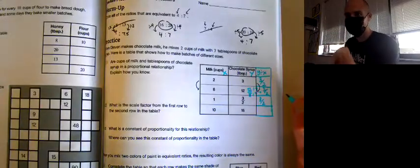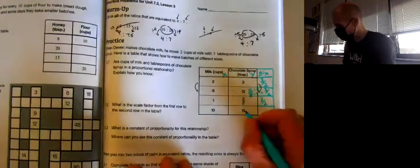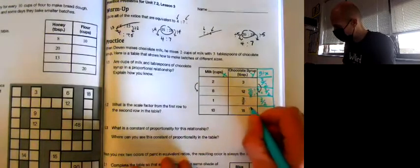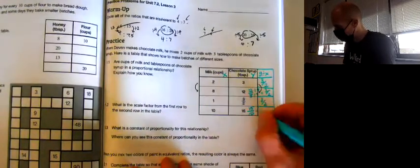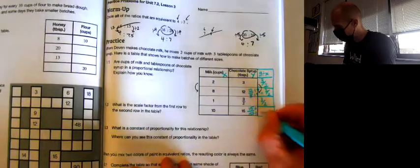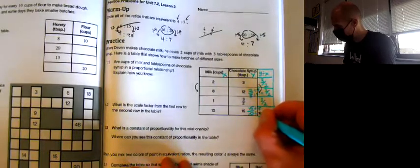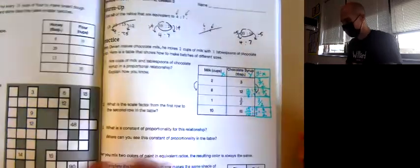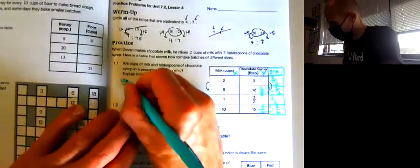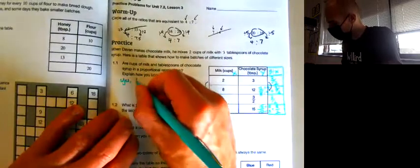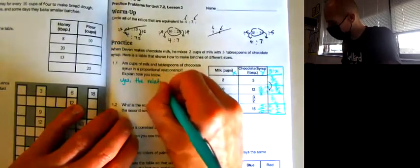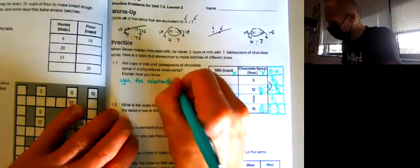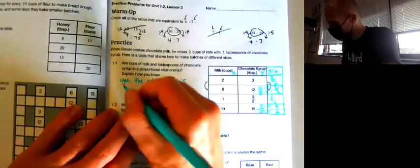As long as this last one's also equal to 3 over 2, then we have a proportional relationship. We have 15 divided by 10. I'll write that as 15 tenths. Divide the top and bottom by 5, and I get a 3 on top and a 2 on the bottom. So yes, the relationship is proportional.